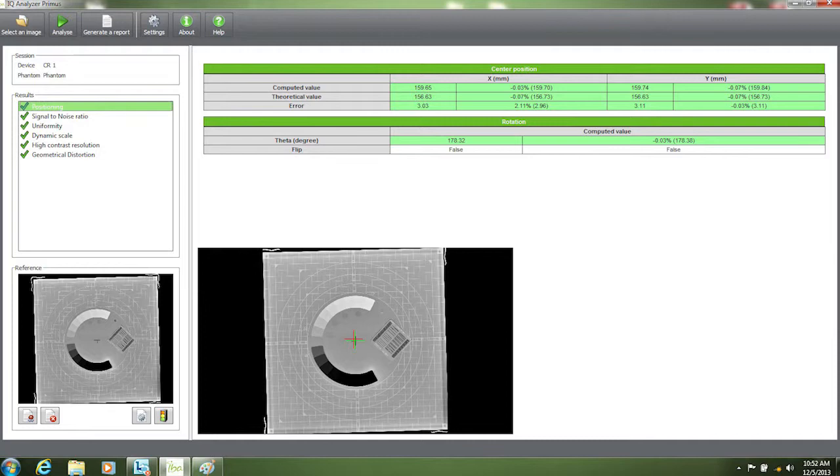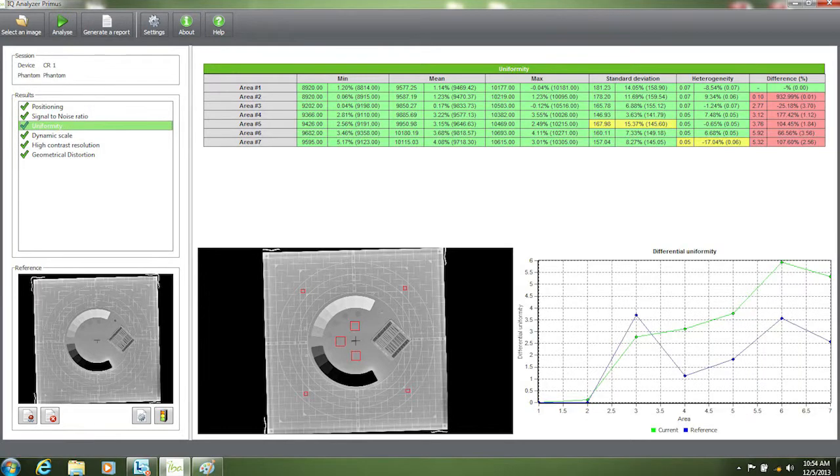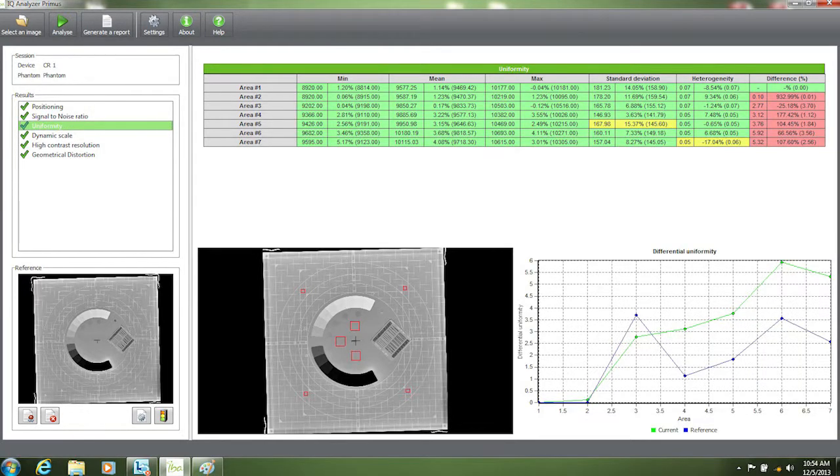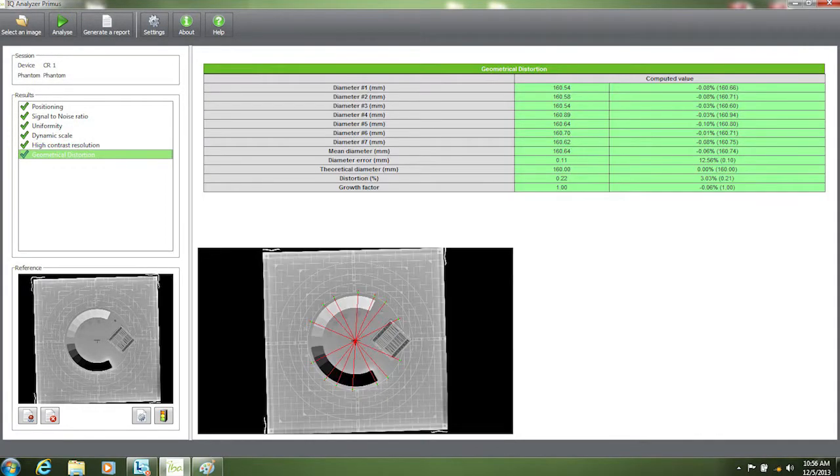Once the image is analyzed, the software performs the following tests: positioning, signal-to-noise ratio, uniformity, dynamic scale, high contrast resolution, and geometrical distortion. Then you generate your report.